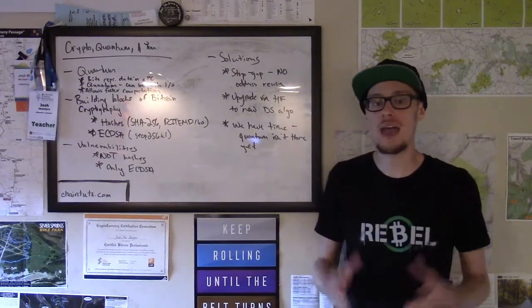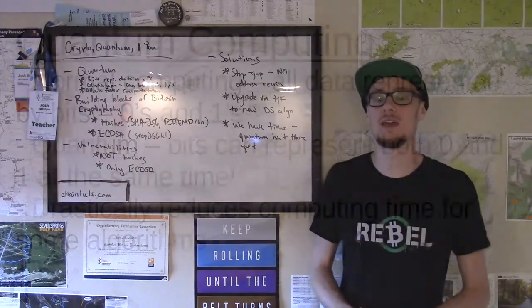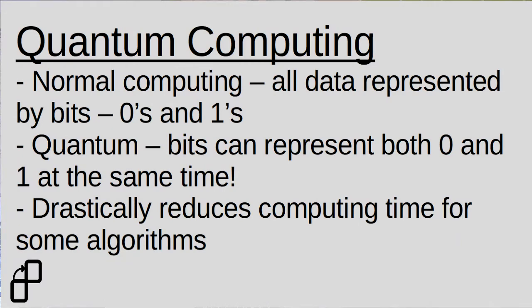In regular computing, everything is ultimately represented as bits. Computers use a binary system where all data is represented as either zero or one. Within a processor, within computer memory and storage, all data — including this video — is really different encoded forms of bits, long strings of zeros and ones. When a processor does computing, it changes those bits between zero and one to do different forms of arithmetic and computations needed for those algorithms.